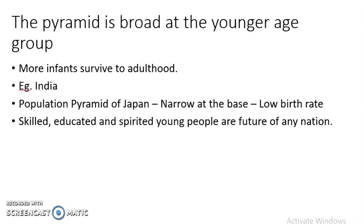The next type of population pyramid is broad at the younger age group. As shown in figure 6.8 for a country like India, the death rate especially among young people is decreasing. Because more infants survive to become adults, the pyramid is broad at the younger age group. This shows that more infants survive to adulthood, which is the trend of the population pyramid for countries like India.